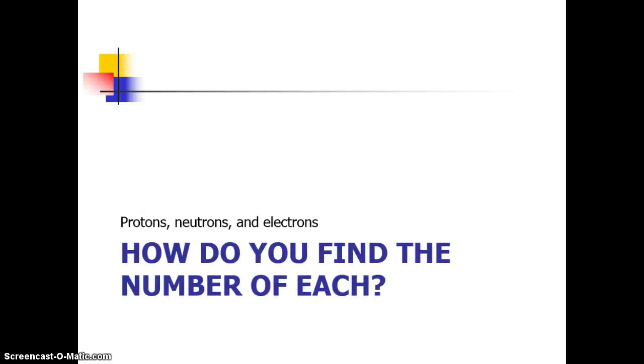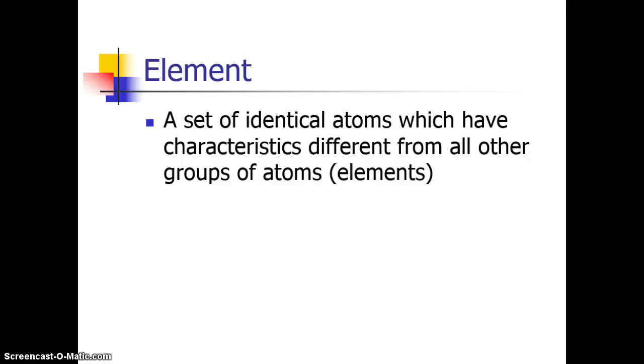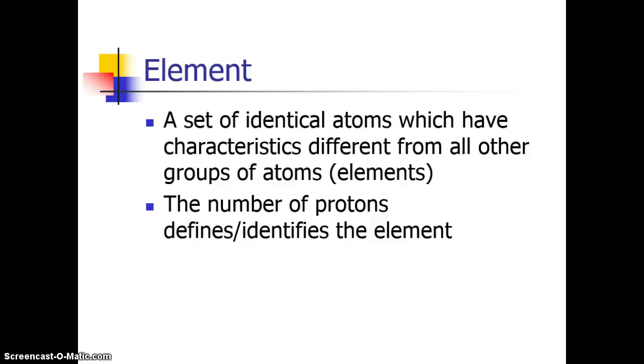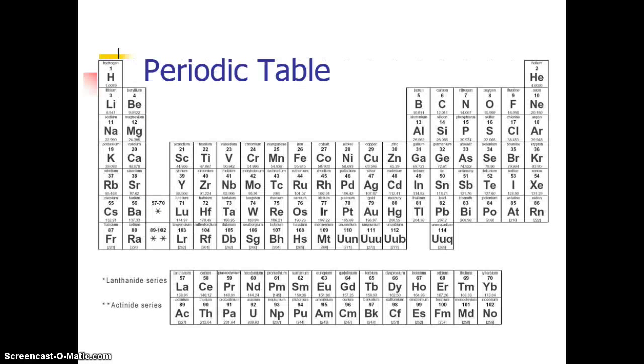So, how do I find how many protons, neutrons, and electrons I have in an atom? Well, I'm glad you asked. Let's take a look at elements. Remember from Unit 1 that an element is a set of identical atoms, and so its specific type of atom is called an element. The number of protons defines or identifies the element. The number of protons may not change without changing the identity of the element.